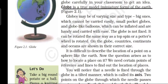Globes may be of varying size and type — big ones which cannot be carried easily, small pocket globes, and globe-like balloons which can be inflated and are handy and carried with ease. The globe is not fixed; it can be rotated the same way as a top spin or a potter's wheel. On the globe, countries, continents and oceans are shown in their correct size.